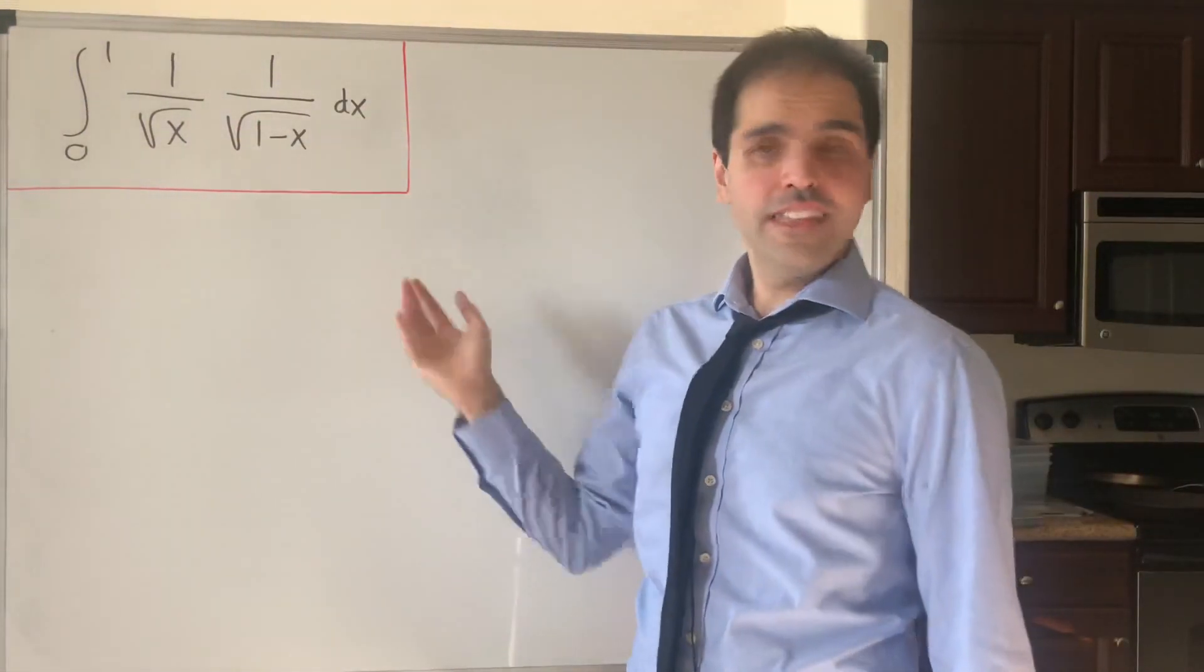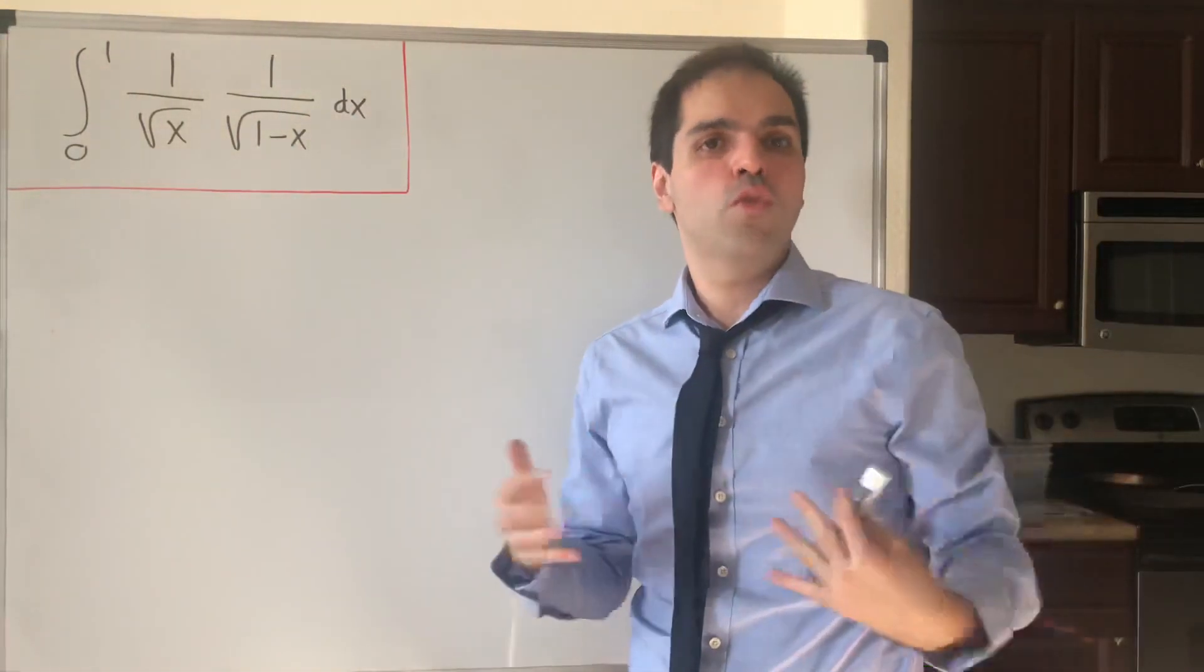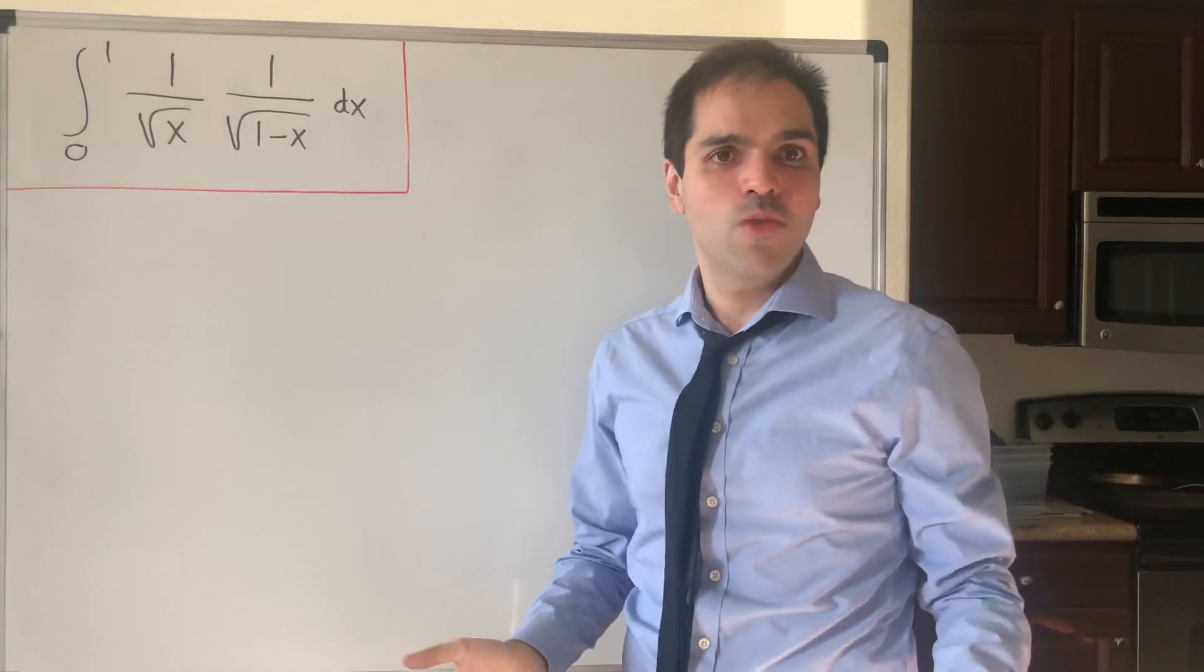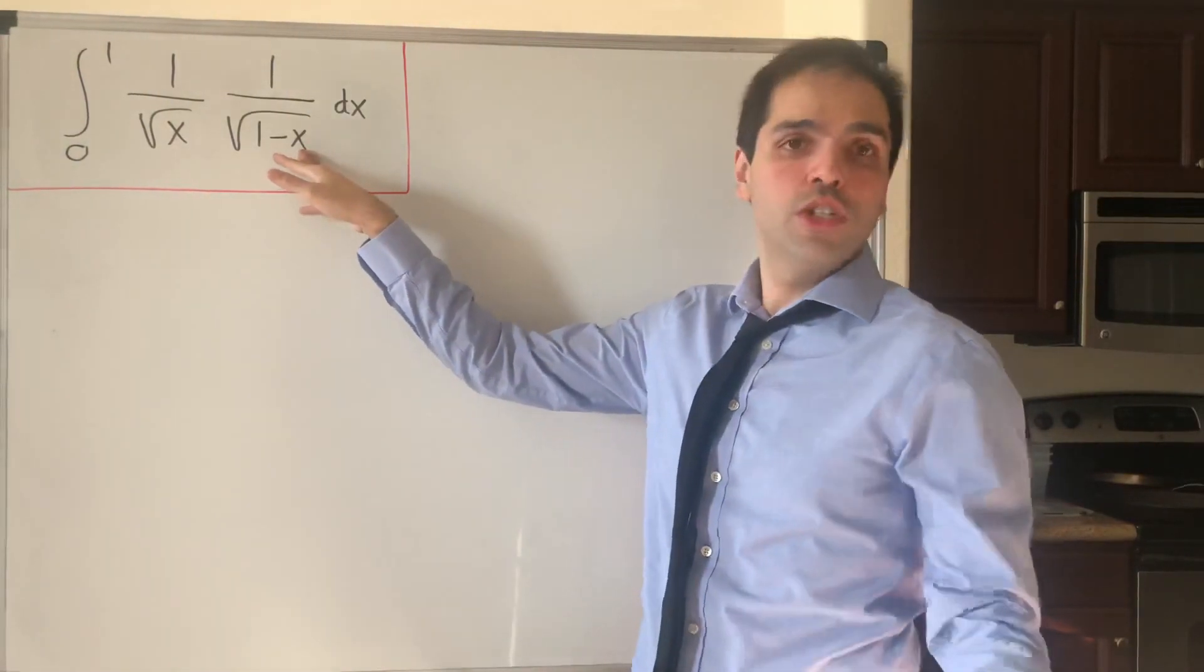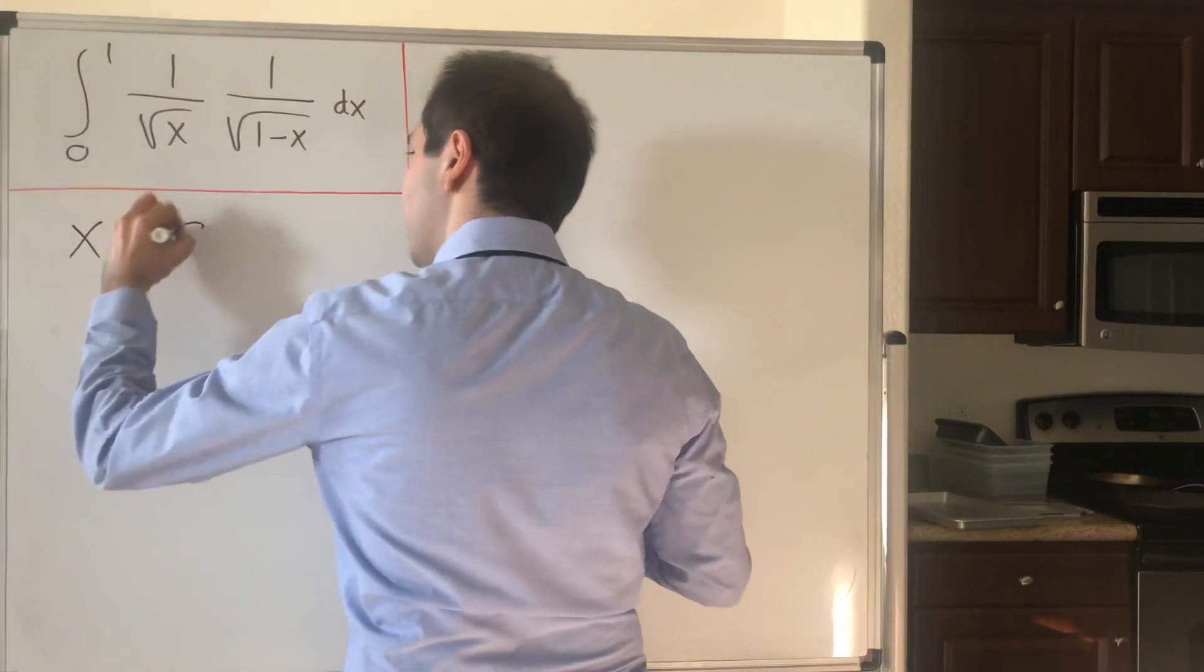So, let's calculate this square root of 1 minus x. That should remind you of square root of 1 minus sine squared, so how about we just use a substitution, x equals sine squared of theta.